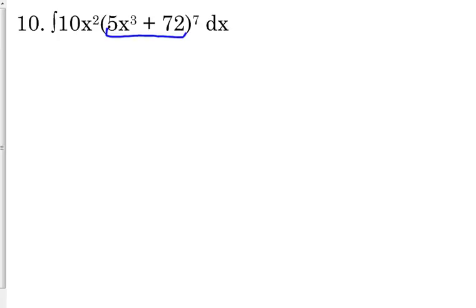So over here to this side, we're going to say u is equal to 5x cubed plus 72. Now we're going to take the derivative of that expression. So du over dx, we're taking it with respect to x, is equal to 15x squared.